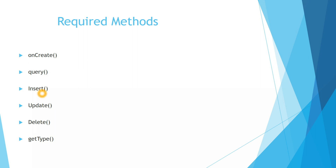a new row, and it will return the content URI for the newly inserted row. update() is again used to update your database — this will return the number of rows updated.